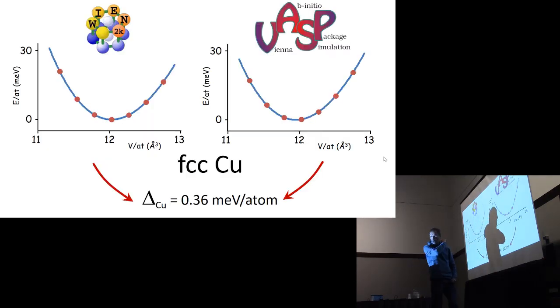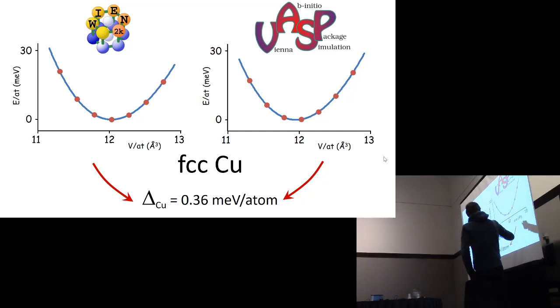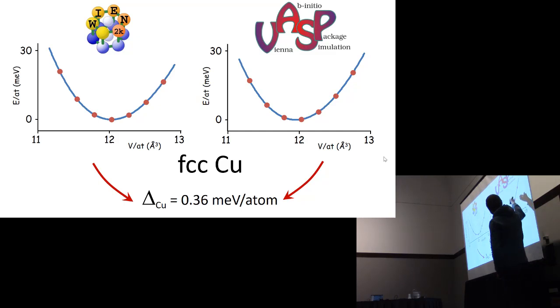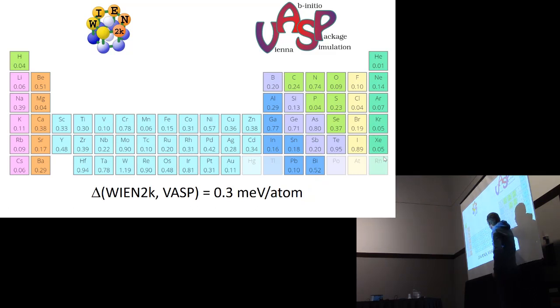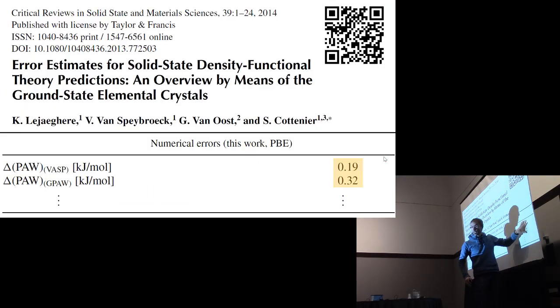If you would do that for WIEN2K and VASP for one crystal of this set, FCC copper, that would be the result. These two energy versus volume curves lead to a delta value of 0.36 meV per atom. If you do this not only for FCC copper, but for all 71 crystals in that set, you get a delta for each of them. You can average over the entire set and express the typical disagreement between WIEN2K and VASP as the average delta over this entire set: 0.3 meV per atom. These were the kind of numbers that were in that table.